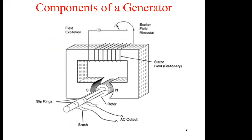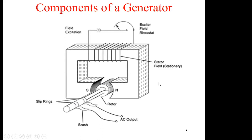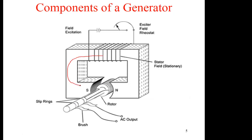What are the components of a generator? We might have field excitation, in which case the stator field will be excited by a source, like a DC source. Then we also have an exciter rheostat. We also have the stator, which is the core — that's where the flux is established. Then we also have slip rings, which are used to transfer the generated EMF.